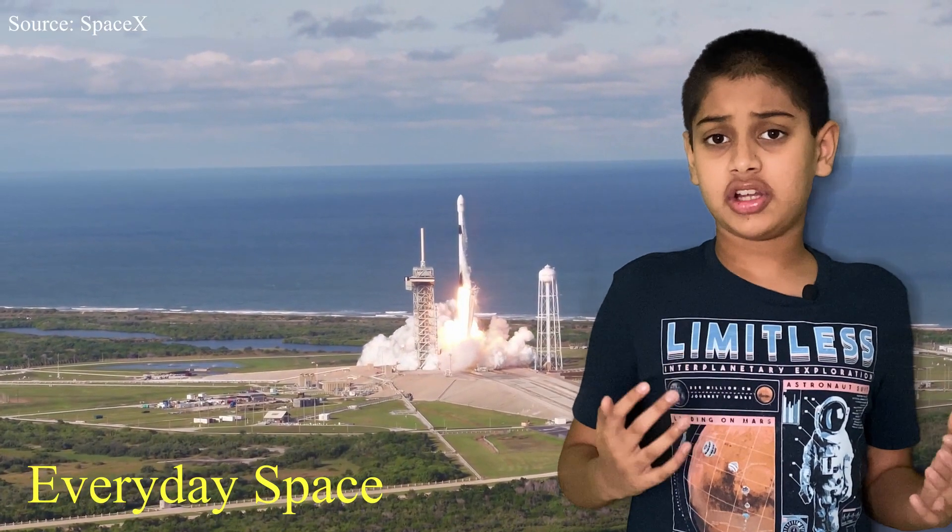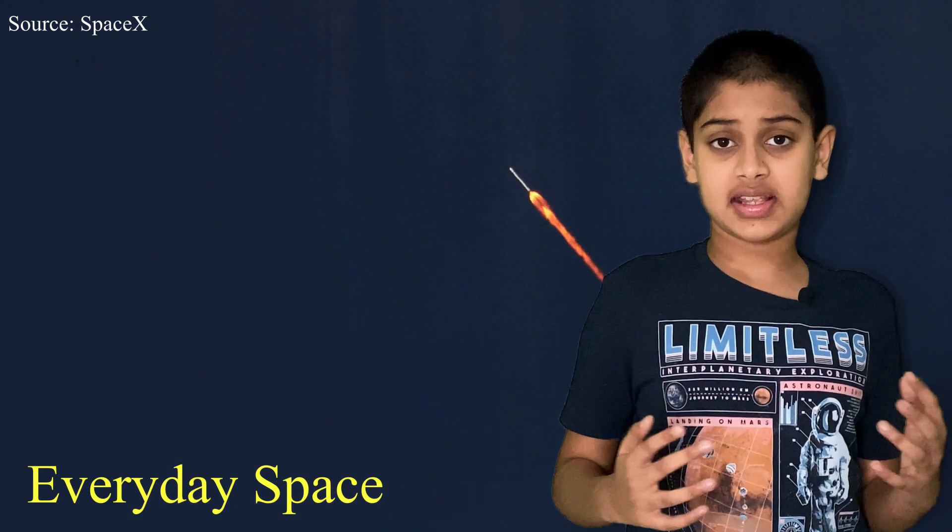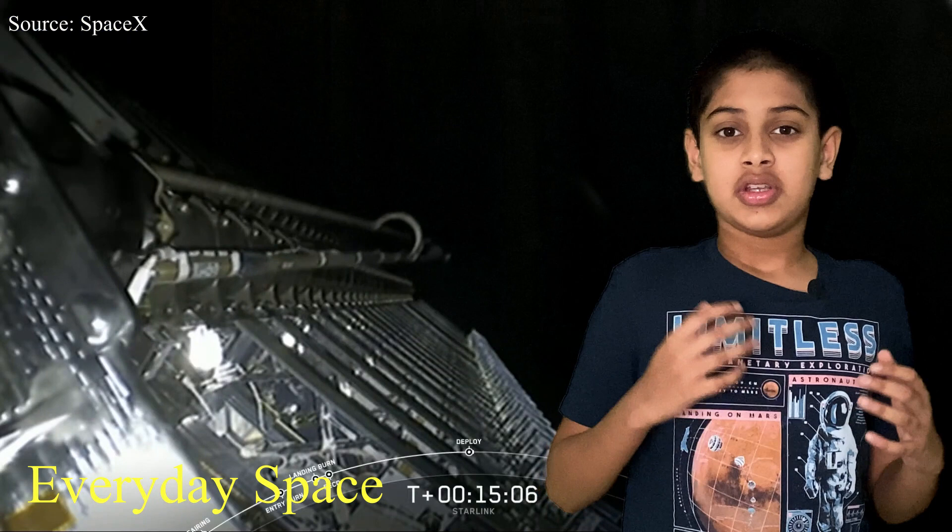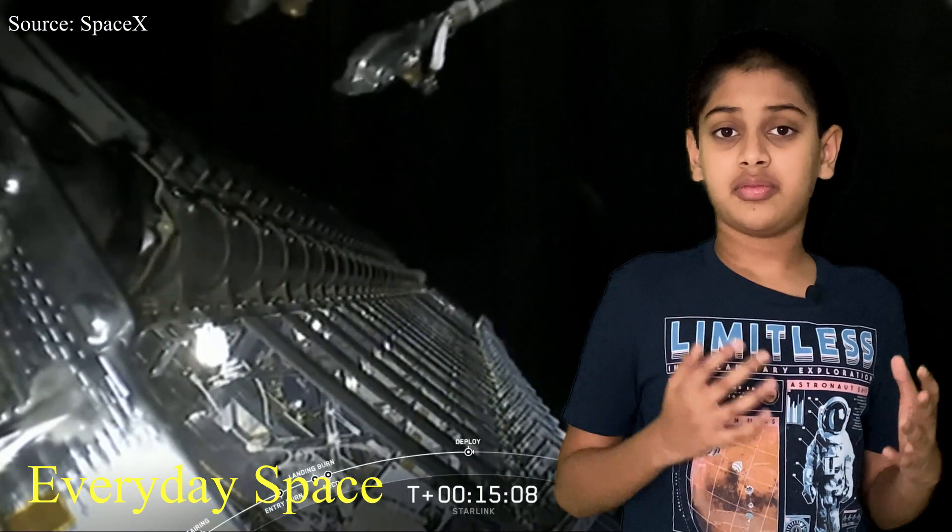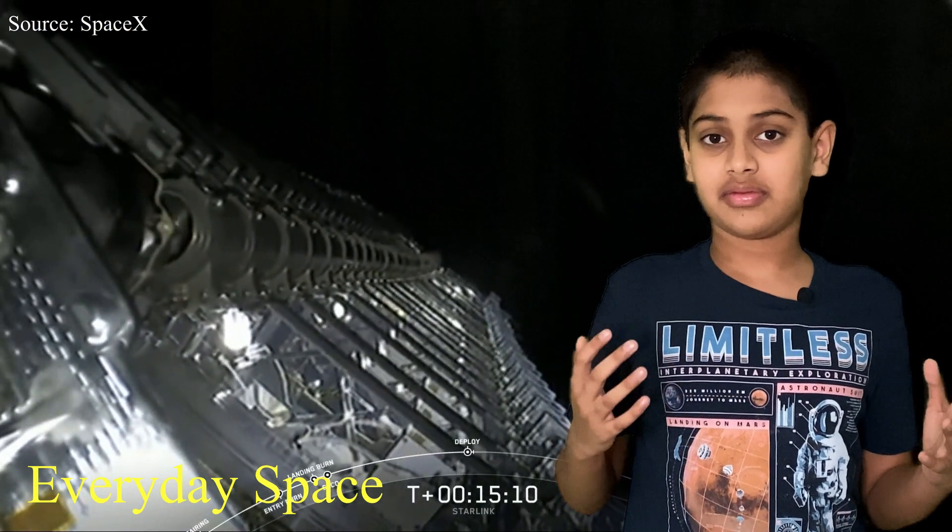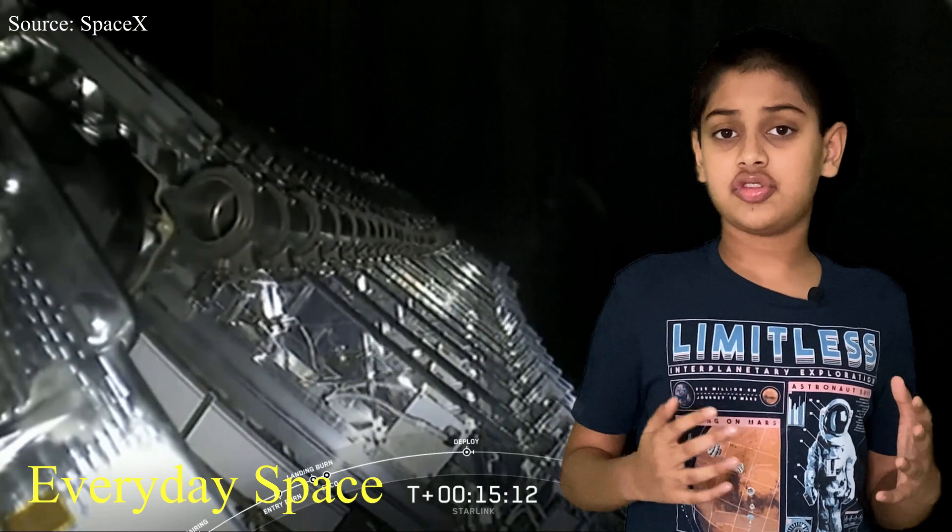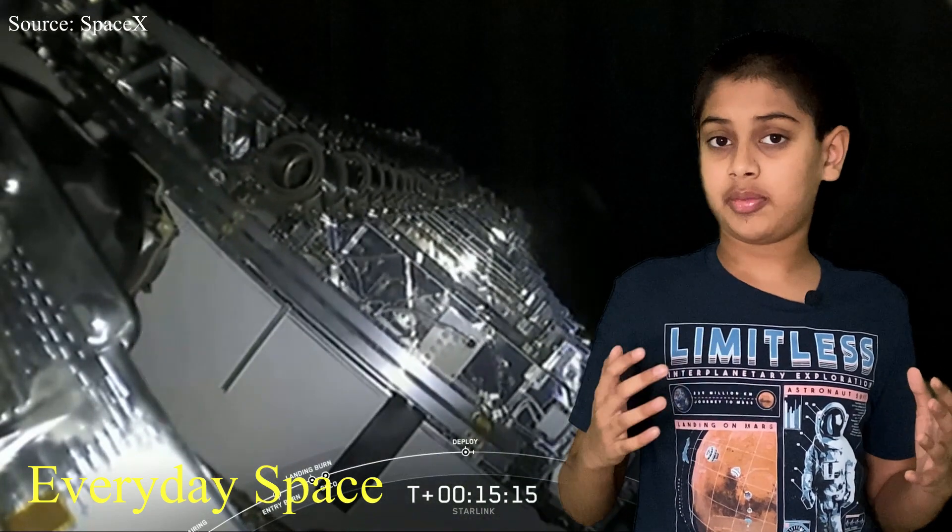They have been developing for four years and have finally launched their first batch in 2019. Every Falcon 9 launch that they do with the Starlink satellites on board, they launch 60 of them at the same time. So far, as of May 2020, they have launched 420 satellites to low Earth orbit.